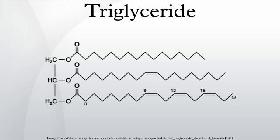As the brain cannot utilize fatty acids as an energy source, the glycerol component of triglycerides can be converted into glucose via gluconeogenesis — by conversion into dihydroxyacetone phosphate and then into glyceraldehyde-3-phosphate — for brain fuel when it is broken down. Fat cells may also be broken down for that reason if the brain's needs ever outweigh the body's. Triglycerides cannot pass through cell membranes freely. Special enzymes on the walls of blood vessels called lipoprotein lipases must break down triglycerides into free fatty acids and glycerol. Fatty acids can then be taken up by cells via the fatty acid transporter.